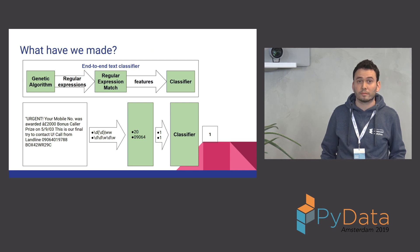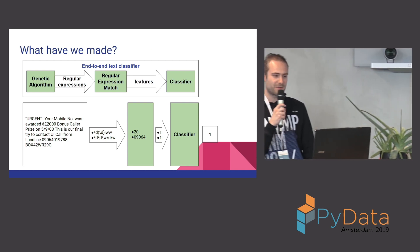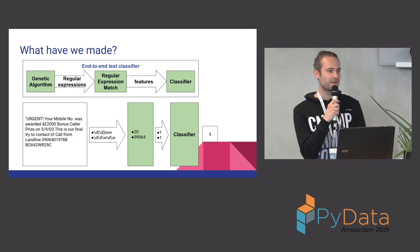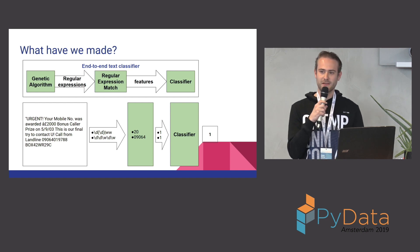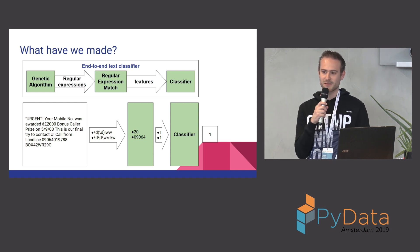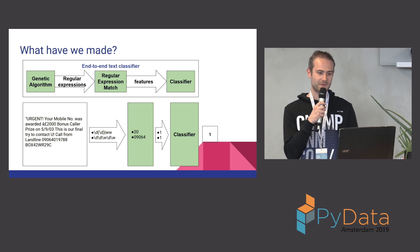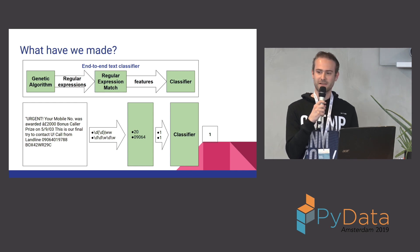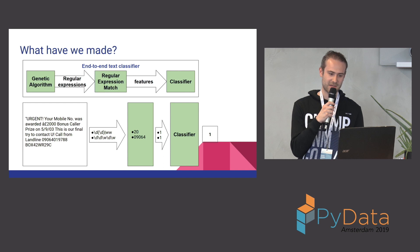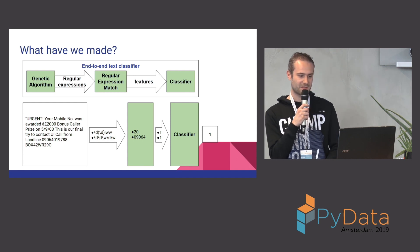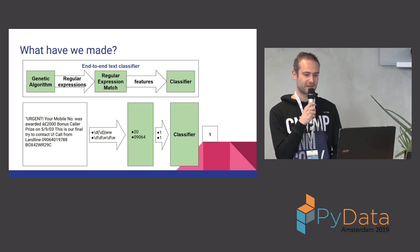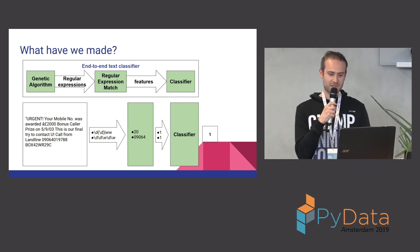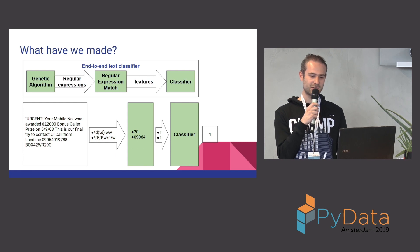So what have we actually made? We made essentially an end-to-end text classifier. We made a genetic algorithm that gives us regular expressions. We can then use these regular expressions to get matches on pieces of text. At the bottom we have a piece of text and we have two regular expressions given by the genetic algorithm, and we see that it matches two strings of digits.